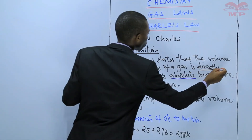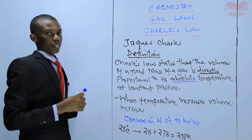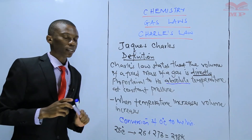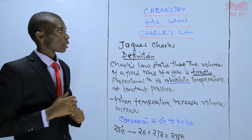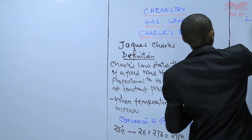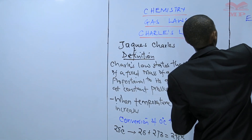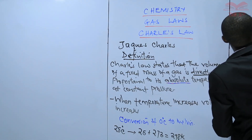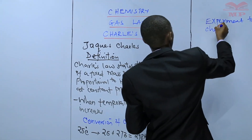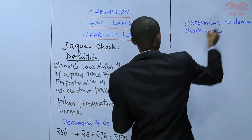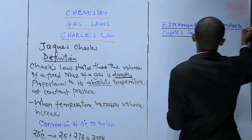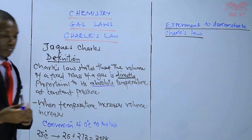So that is how we define Charles' Law. Make sure you don't forget, and don't leave out the key words — 'directly proportional' and 'absolute temperature.' Now I want us to do an experiment to demonstrate Charles' Law. I will give you a procedure.